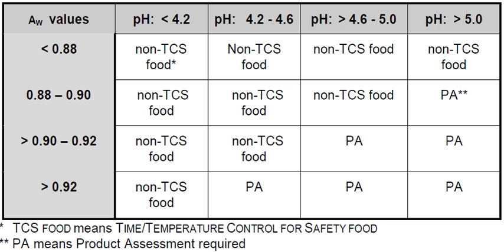For more information, the following resources provide detailed information on time and temperature controls for food safety: the 2013 FDA Food Code, FDA HACCP Manual, USDA HACCP Manual, FSIF Meat and Poultry Product Hazards and Control Guides, and the Food Safety Modernization Act.